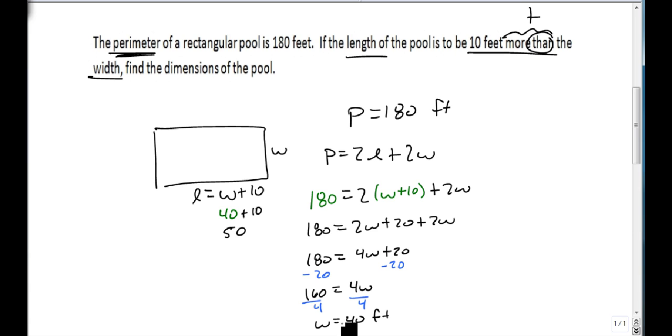And that's 10 feet more, so that part works. But let's make sure it works for the original. It does. 180 equals 2 times 50 plus 2 times 40. Well, that's 180 equals 2 times 50, that's 100. 2 times 40 is 80. 100 plus 80 is 180. Sure enough, both sides work. So my dimensions are the length is 50, the width is 40, or we have a 40 by 50 swimming pool.